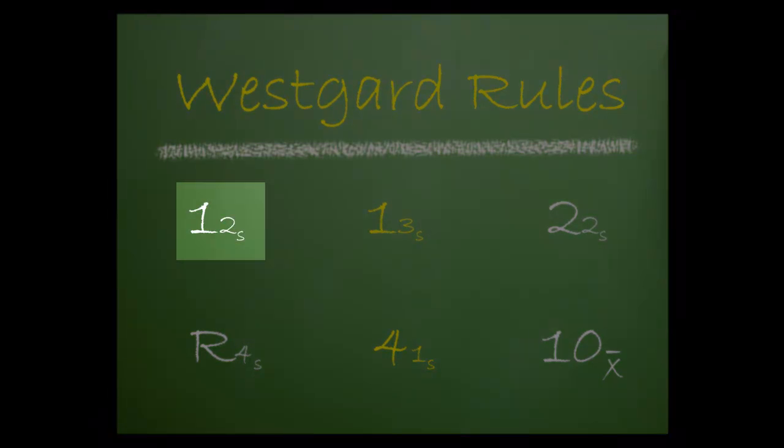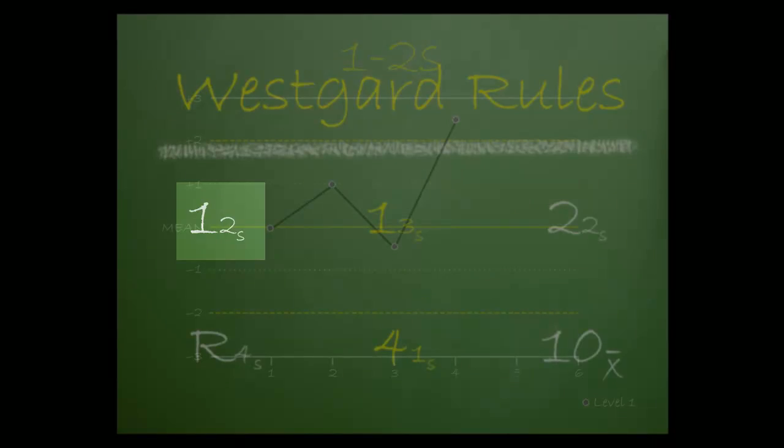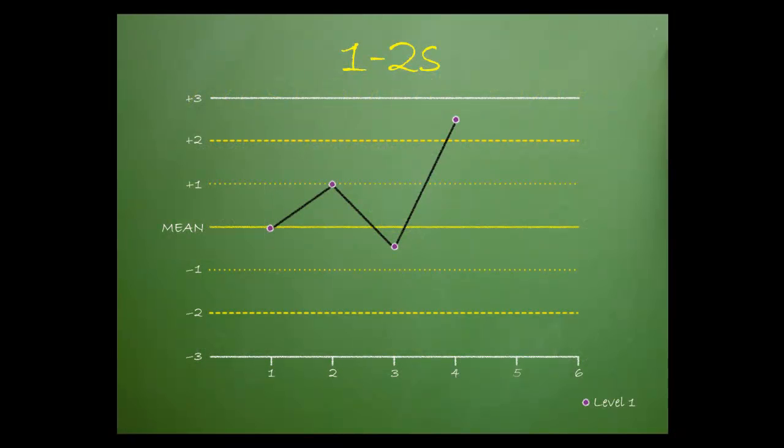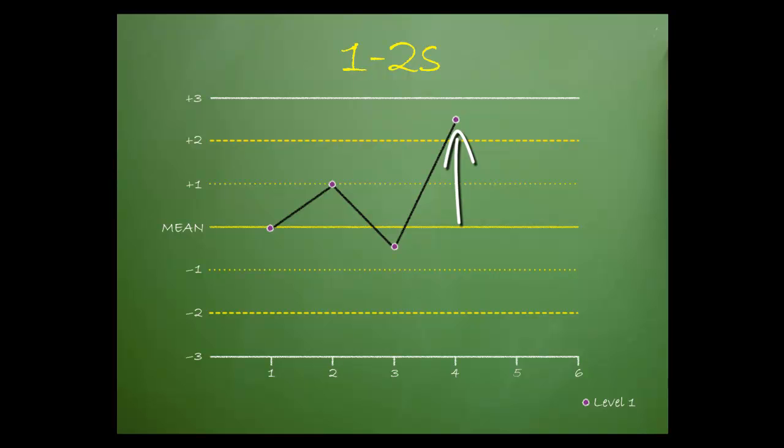Let's start off with WestGuard's 1-2-S rule. This rule is violated when a single control value is outside two standard deviations from the mean. In this case, it's on the positive side of the mean. However, remember that the violation can occur on either side of the mean.